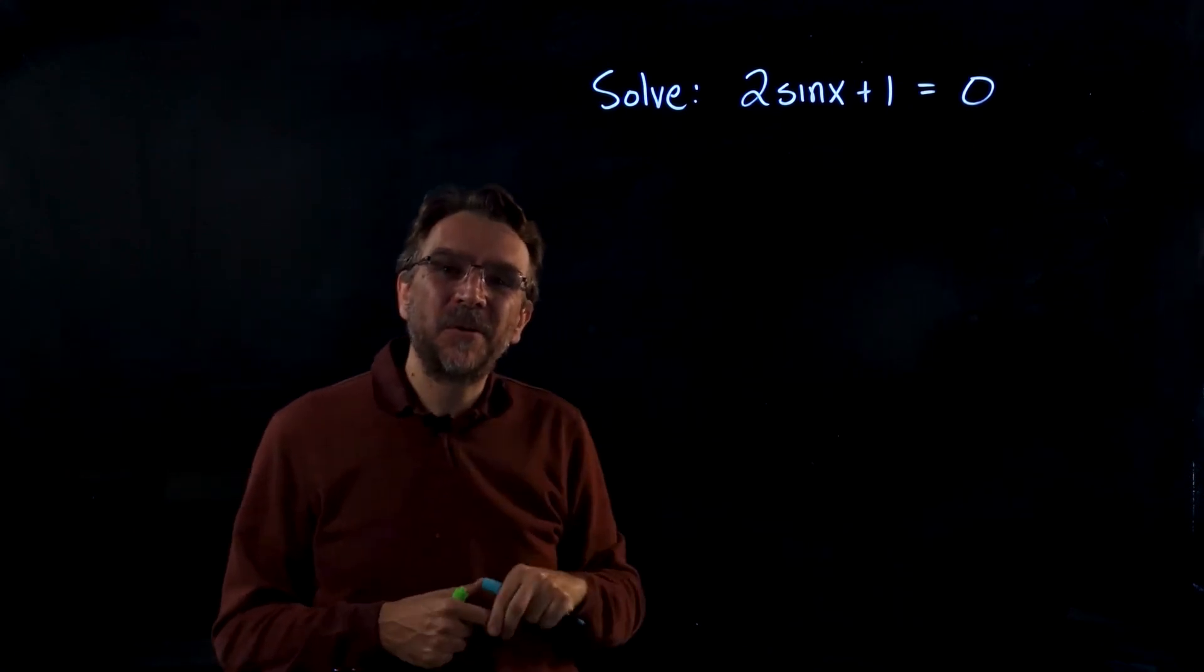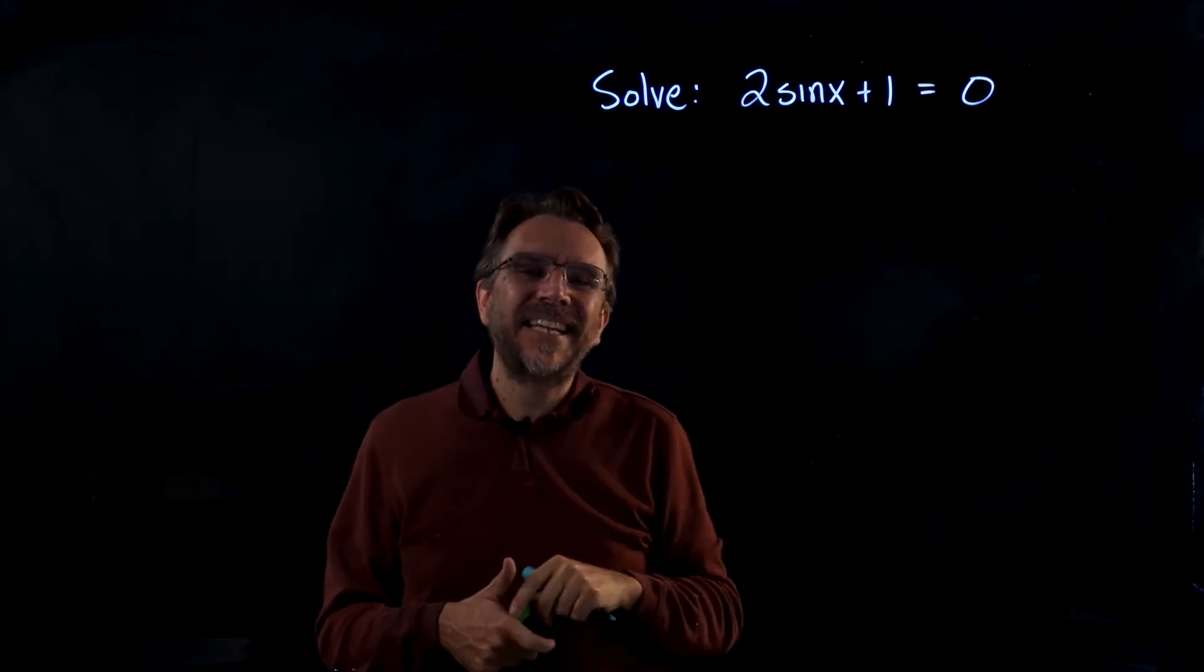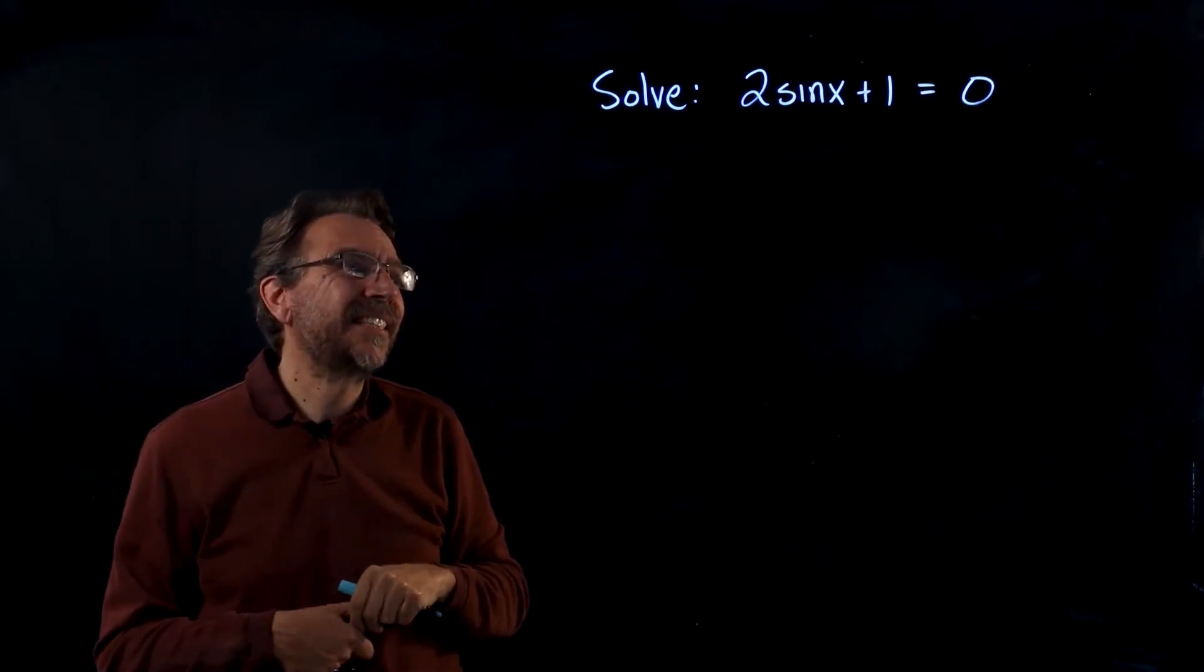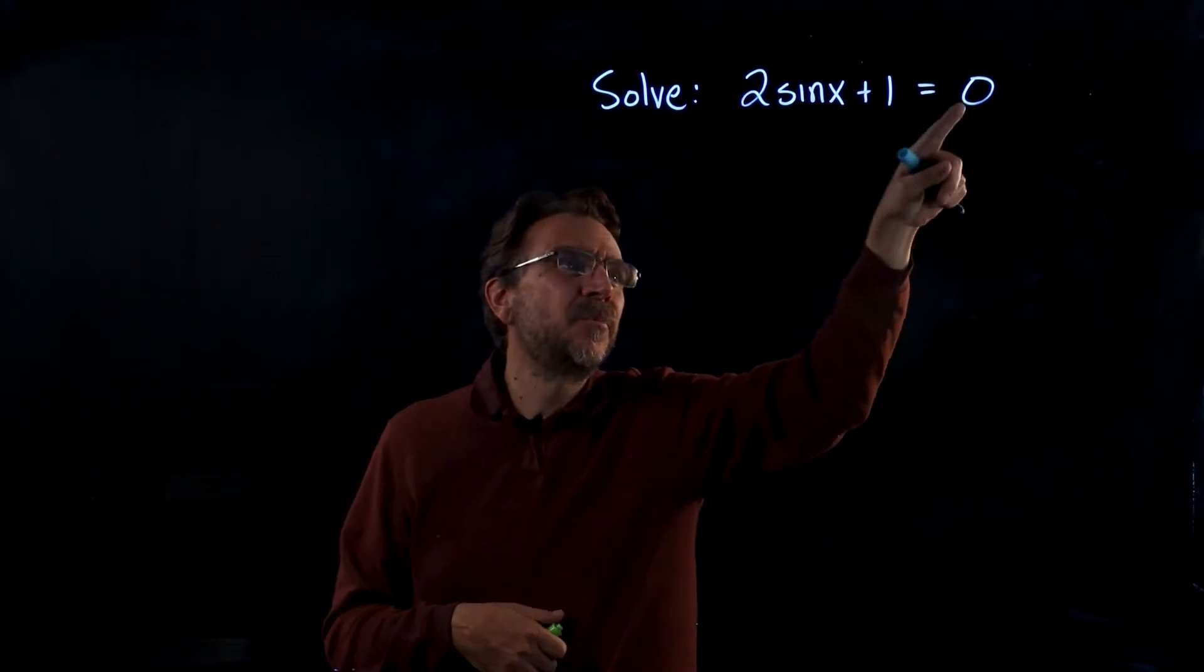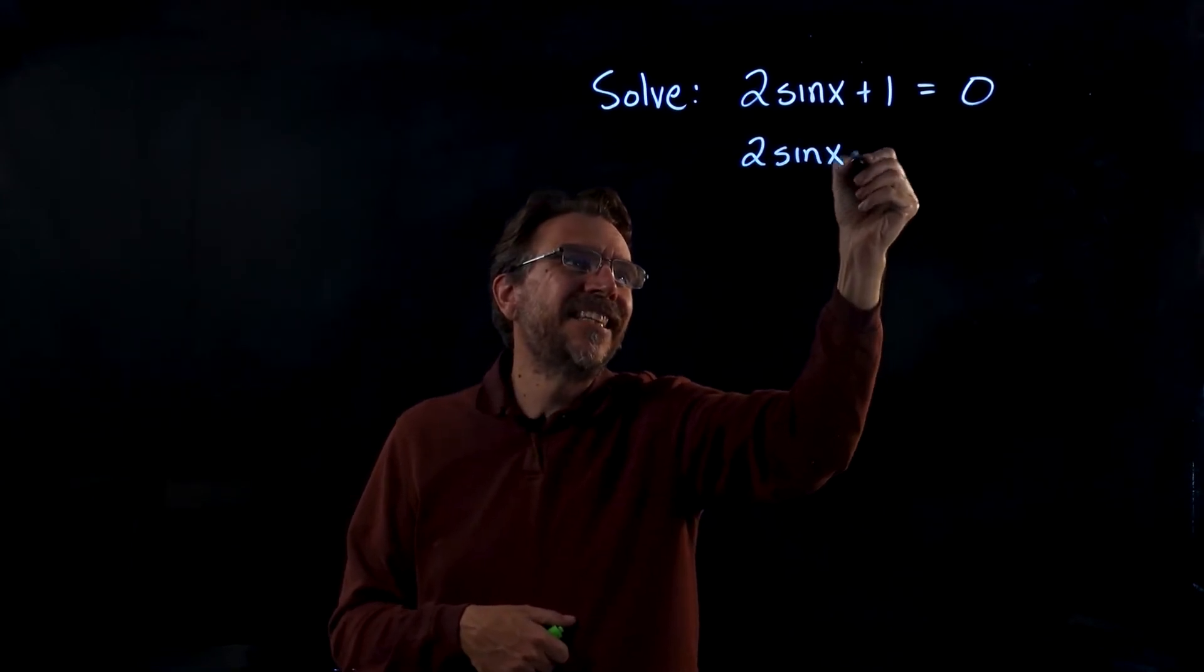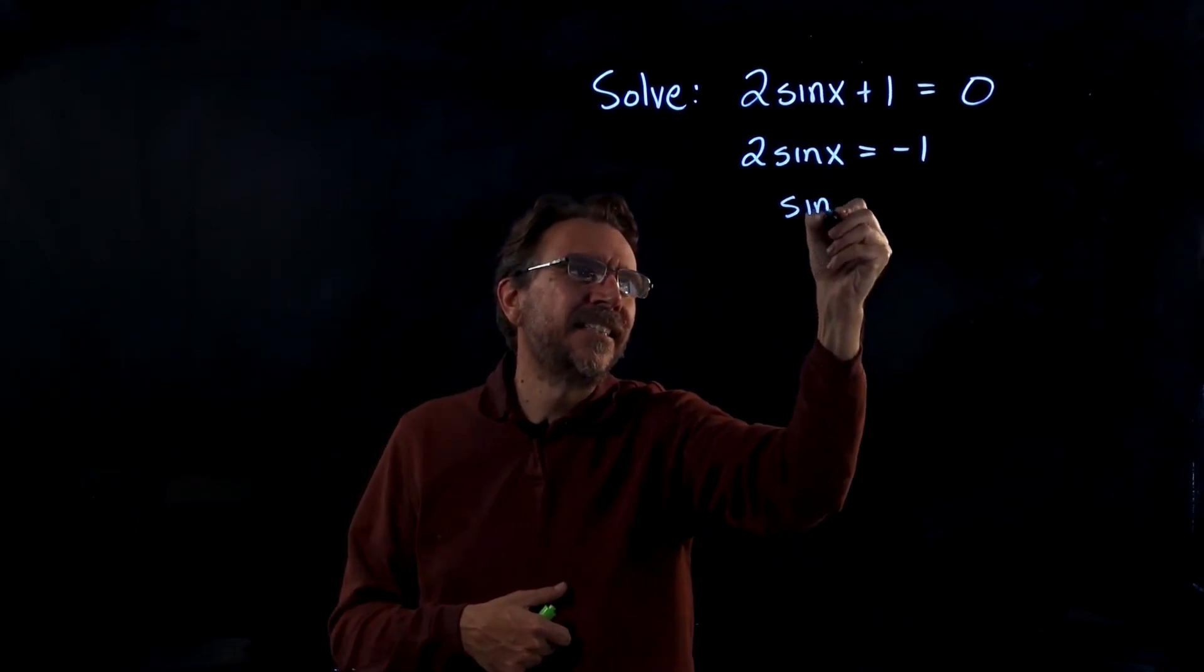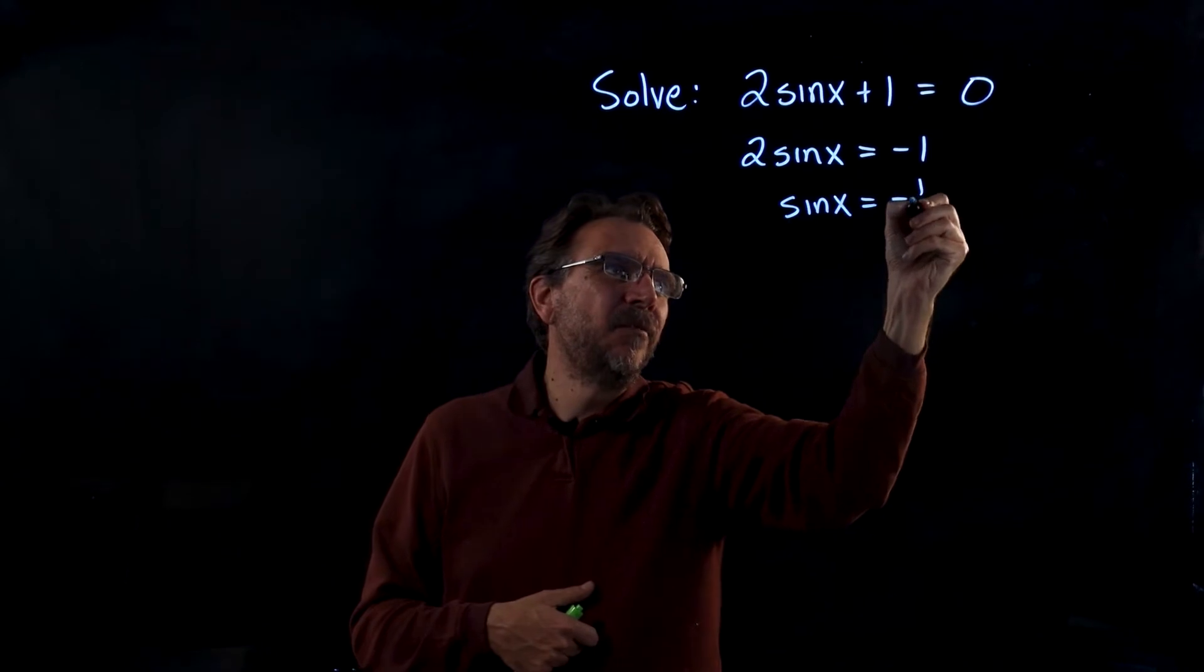Here we're asked to solve a trigonometric equation. This one's linear. The first step is to isolate that trig function sine x. To do that, we'll subtract 1 on both sides, and that'll leave us with 2 sine x equals negative 1. Next, dividing by 2, we have sine x equals negative 1 half.